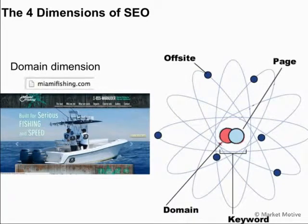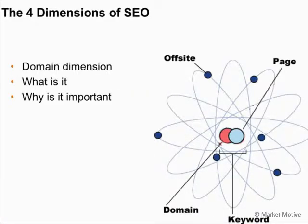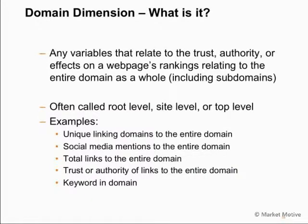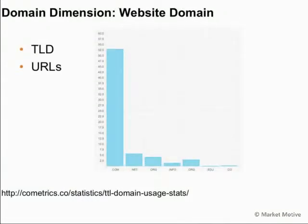The domain dimension is important as well because search engines look at the overall domain authority or domain quality to determine where a webpage should rank. Any variables that relate to the trust, authority, or affect a webpage's ranking relating to the entire domain as a whole — including subdomains — fall under this dimension. It could be called the root level, the site level, the top level. Examples include unique linking domains to the entire domain, domain link authority, social media mentions, and social authority. The domain dimension includes the website domain, top-level domain, or URL.